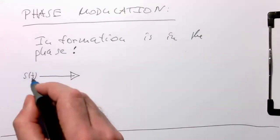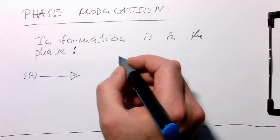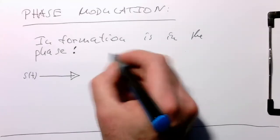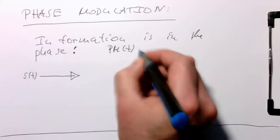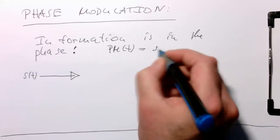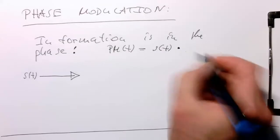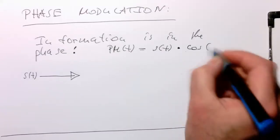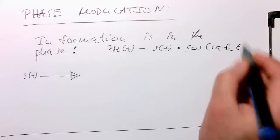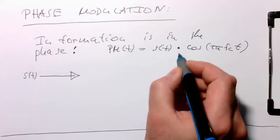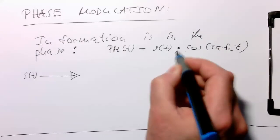So we've got our stream S of t and remember this signal PM of t is generated by S of t multiplied by cosine of 2 pi fc t, and so we see there's a multiplication operation here.